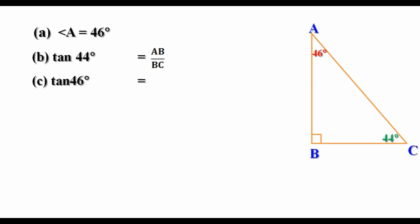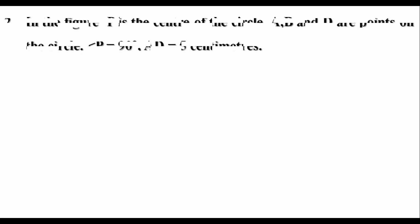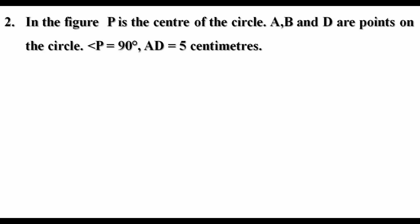Now tan44 into tan46 equal to AB by BC into BC by AB. AB and AB get cancelled, again BC and BC get cancelled, so we get 1. That is tan44 into tan46 equal to 1.